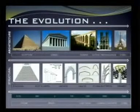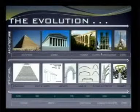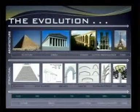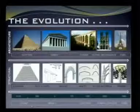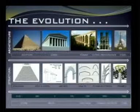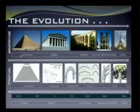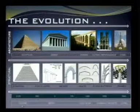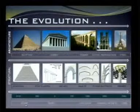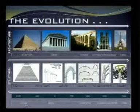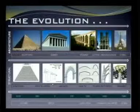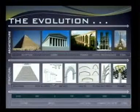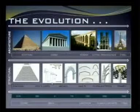Now we combine architecture, structure, and material — three together — and take a look at how they evolved over 5000 years. The pyramid started 5000 years ago; the concept is stacking and the material is stone — that is the most ancient one. Then we have the Greek post and lintel. This is the famous Parthenon in Athens; I have seen it myself, though it is now deteriorated.